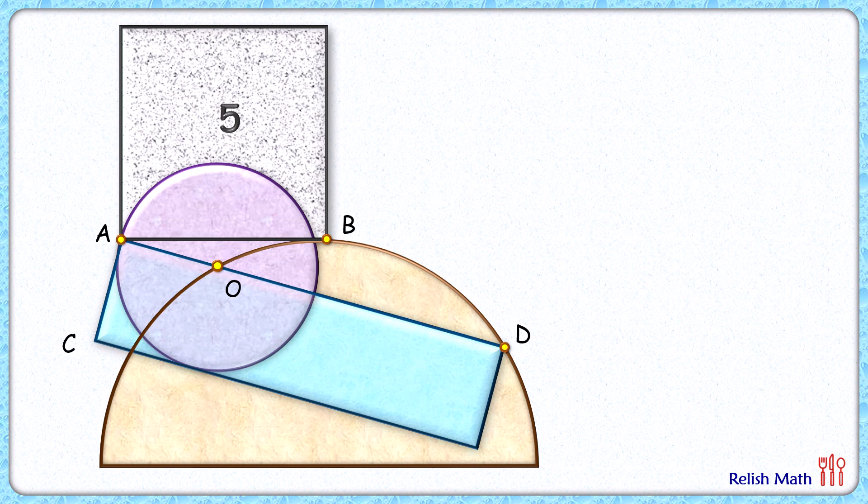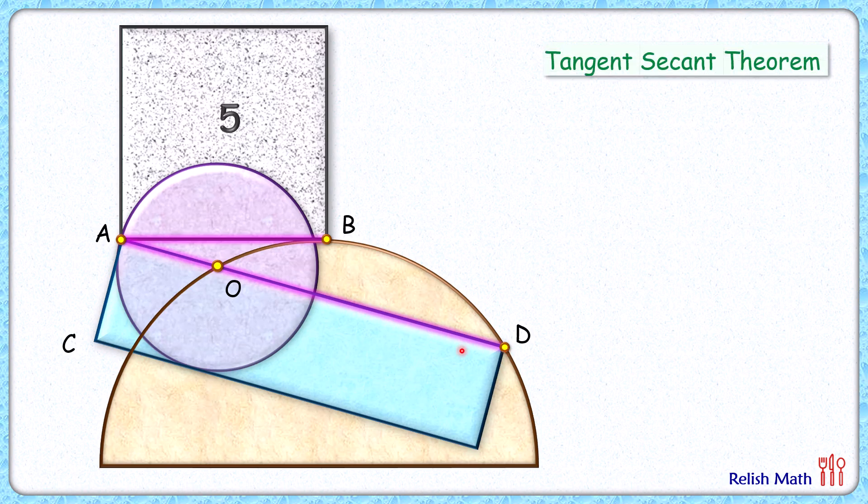Let's check this simple and elegant solution. Here with respect to this brown semicircle, from an external point A, a tangent is drawn and a secant is drawn. Now applying tangent secant theorem here we get AO times AD is AB square.